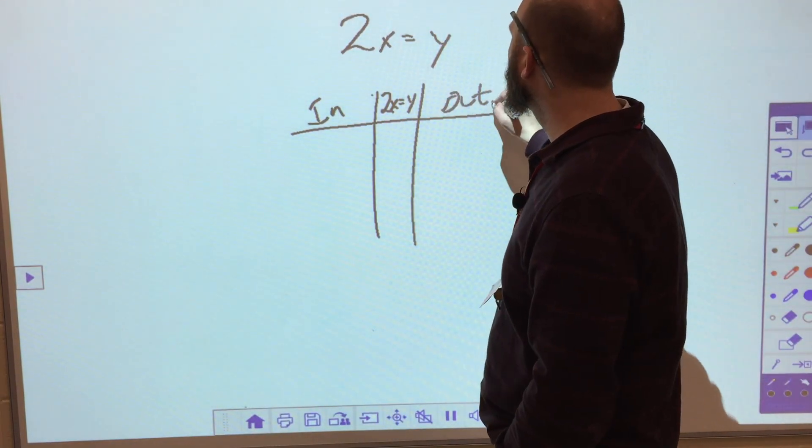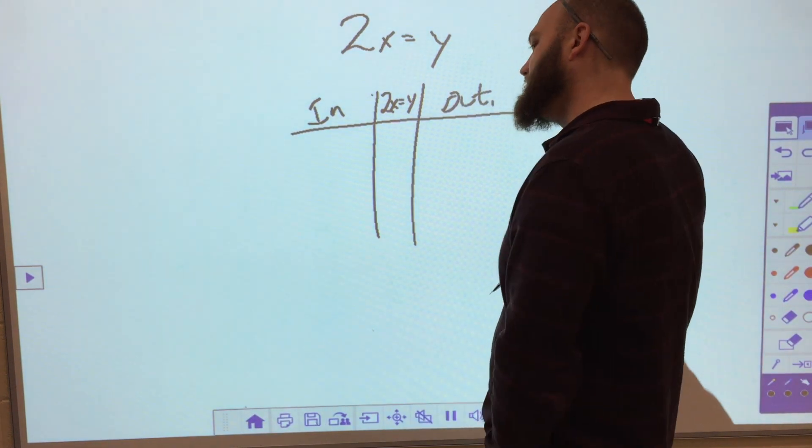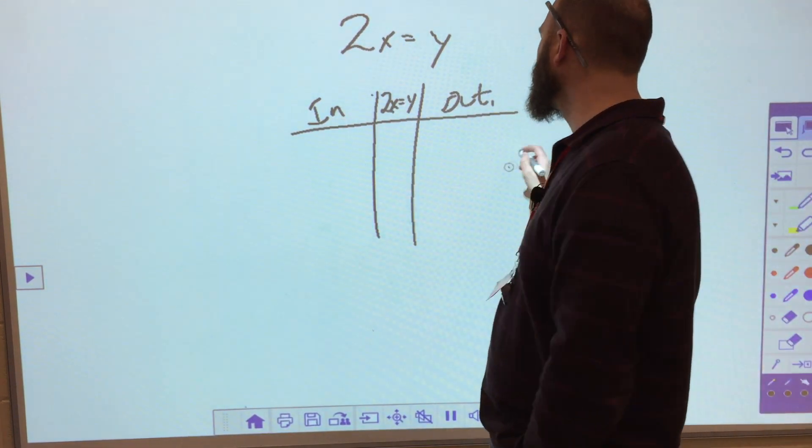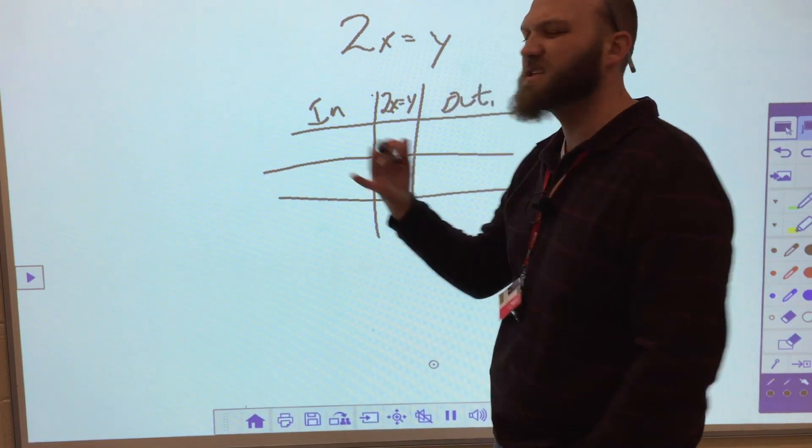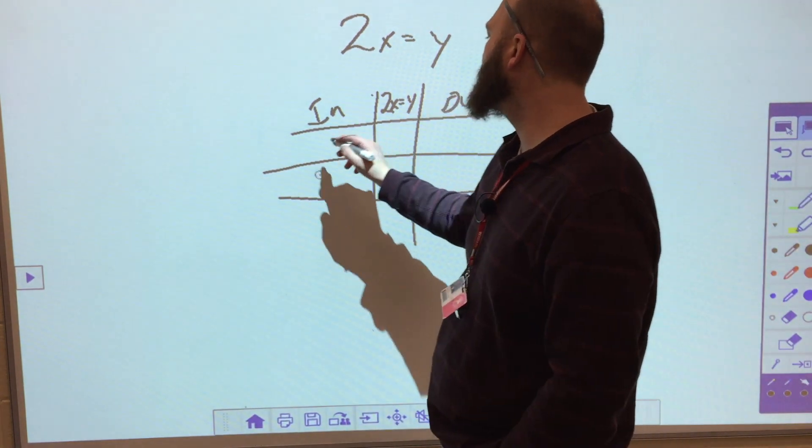And then my out, which is my dependent variable. So whatever comes out here depends on what goes in here. And I'll give you just a couple in here. So 2x equals y.